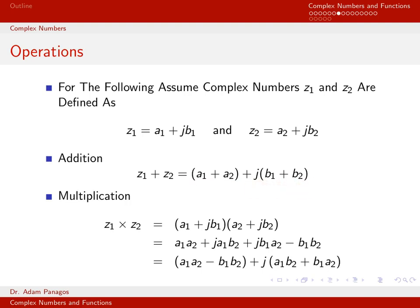For multiplication, you multiply out term by term algebraically: a1·a2 plus j·a1·b2 plus j·b1·a2 plus j²·b1·b2. Since j times j equals negative 1, the last term becomes minus b1·b2. Grouping real and imaginary parts: the real part is a1·a2 minus b1·b2, and the imaginary part is j(a1·b2 plus b1·a2). This still has the form of a real part plus j times an imaginary part.